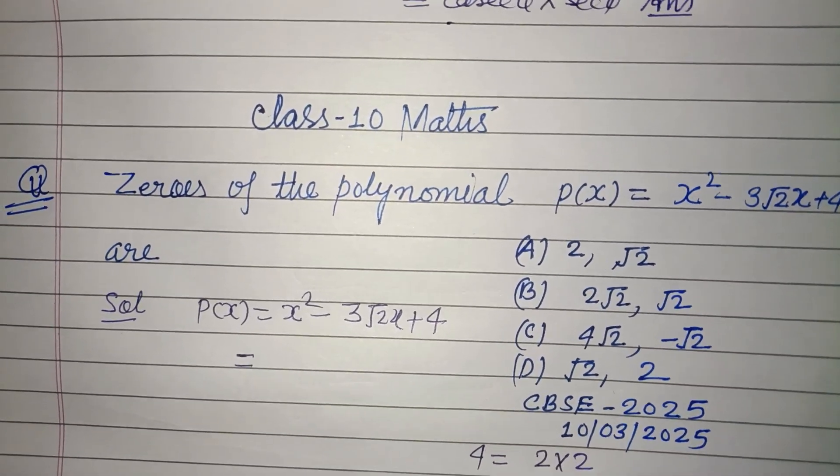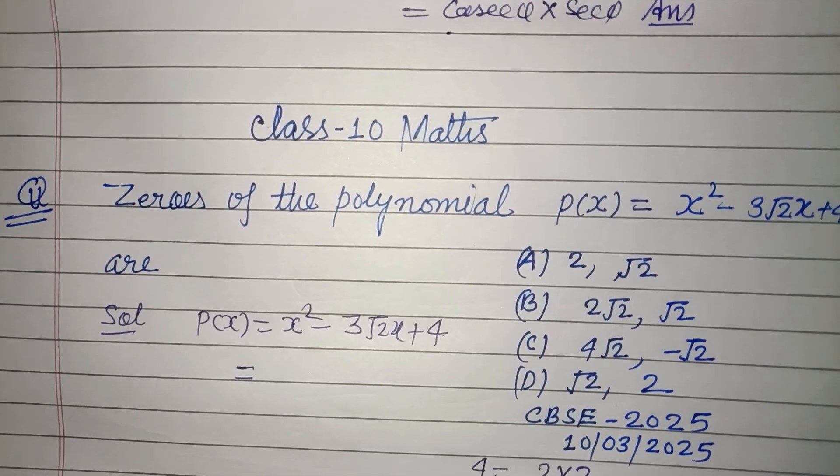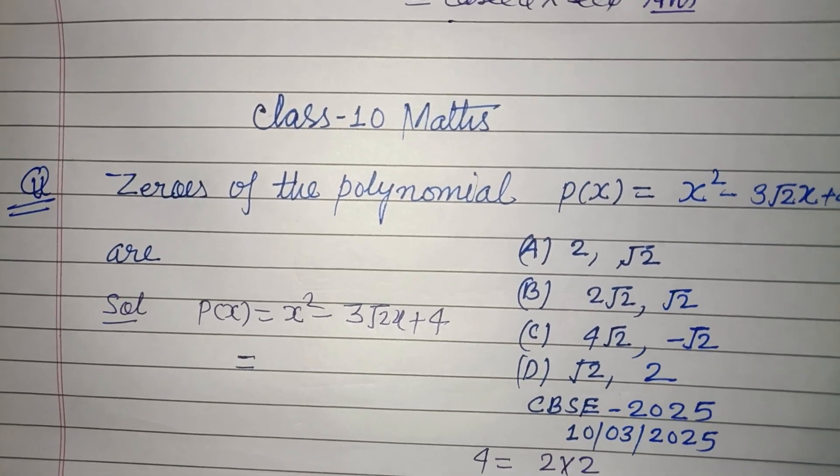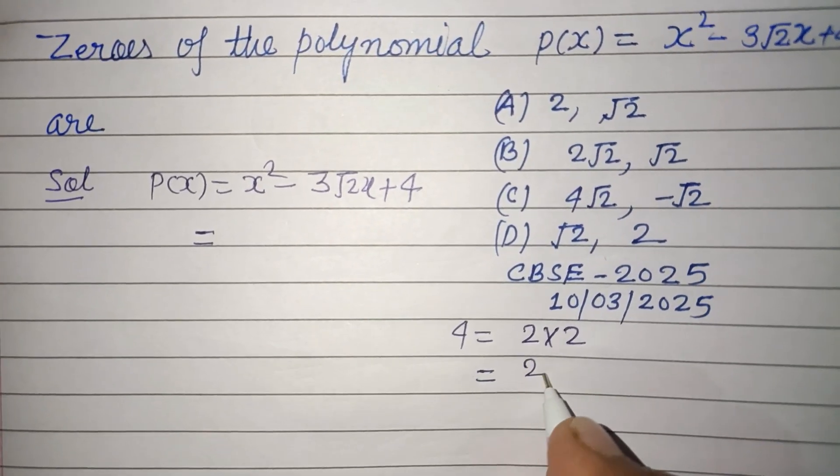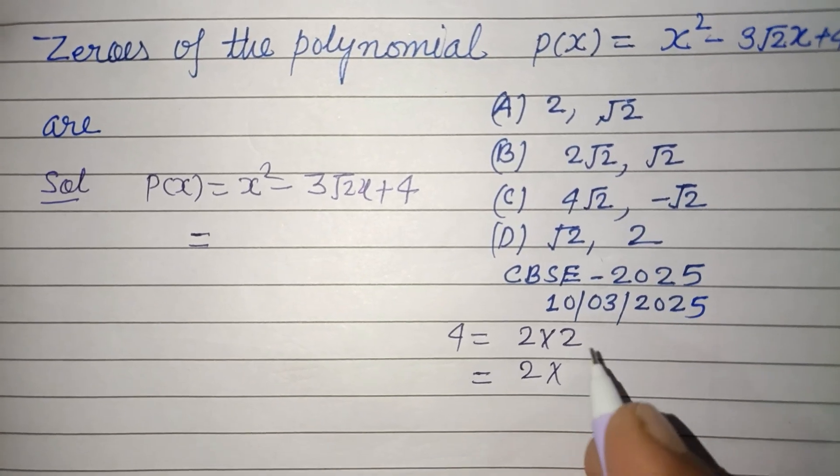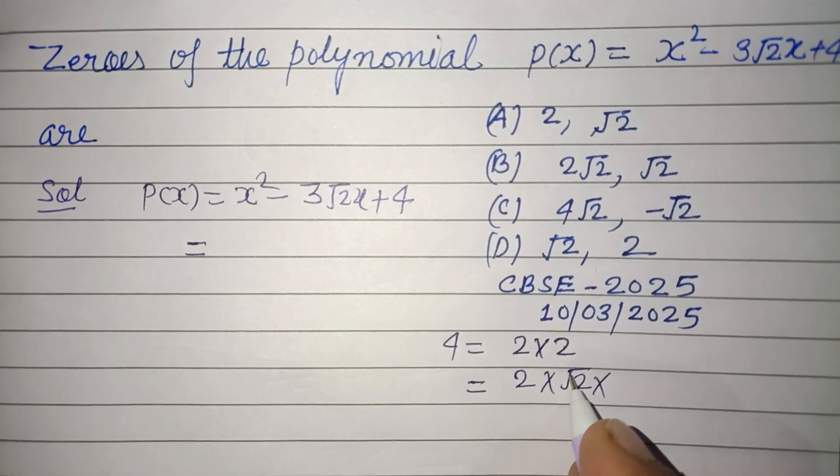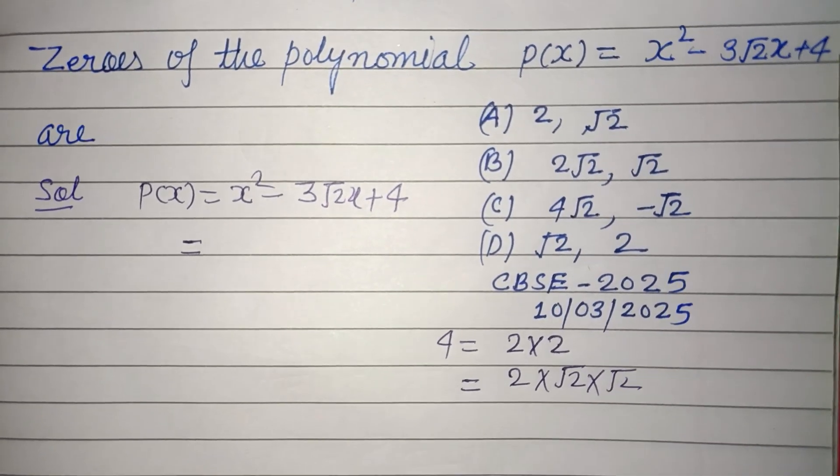And we can write √2 × √2, as √2 × √2. 2 can be written as √2 × √2.